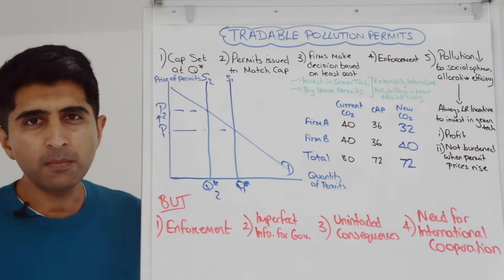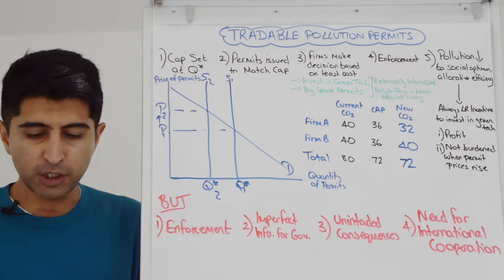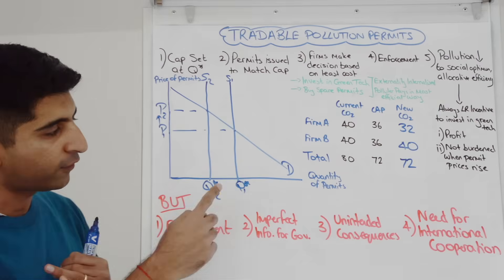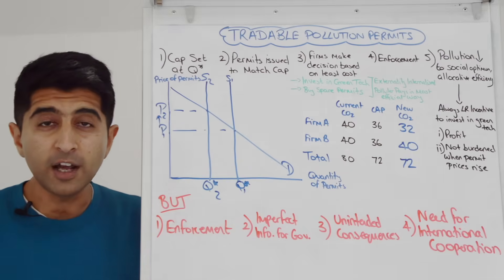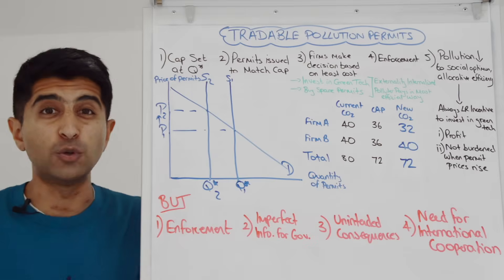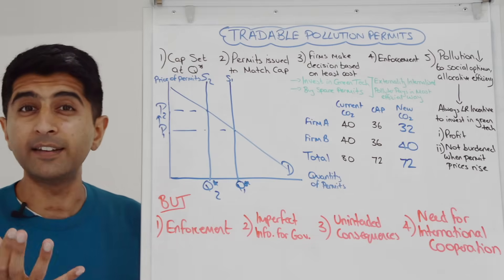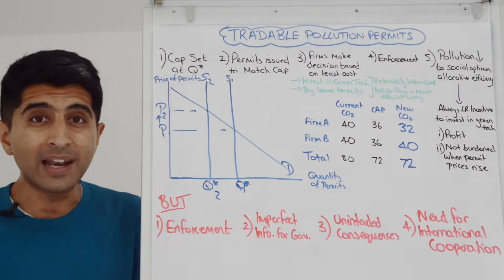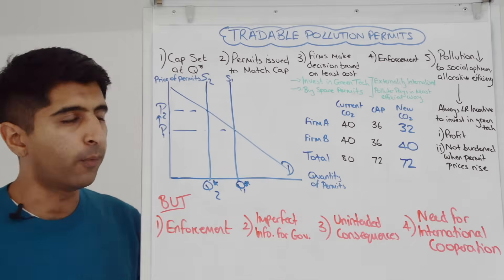We assume that governments have perfect information in valuing externalities and knowing the social optimum, but in truth they don't. So the cap level is likely to be set too tight or too lax — either way there is a risk of government failure.